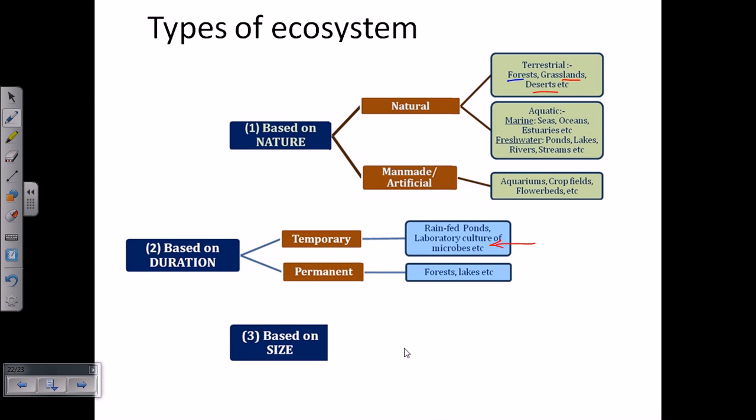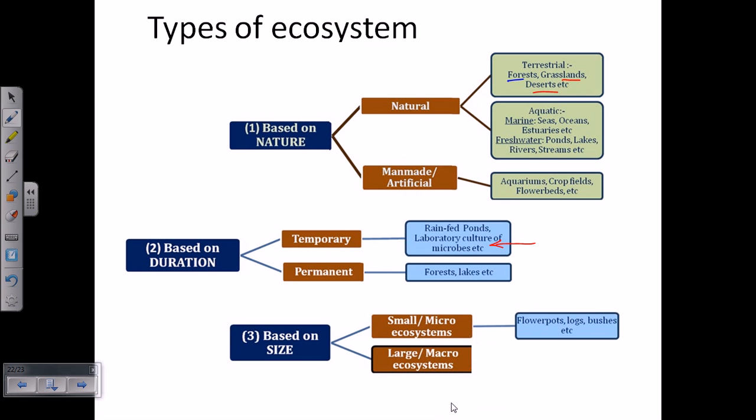If you look at the ecosystem classification based on the size, we can have again two types: small ecosystems or micro ecosystem and large ecosystem or macro ecosystems. If you look at the small ecosystems, the example is flower pots, logs, bushes, etc. They're very small ecosystem. It's not about the material that is making the ecosystem. It might be large material that makes small ecosystem, but the ecosystem is small. That means the interactions of food web and everything is limited to a very small region.